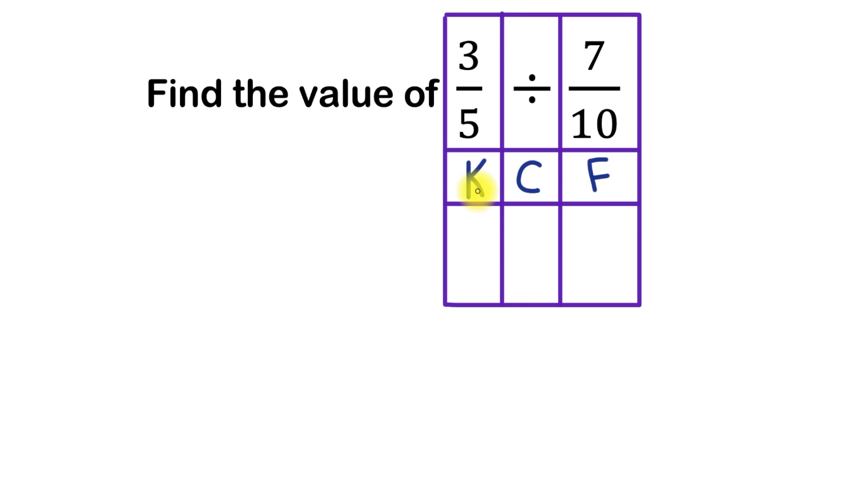When we say keep, we mean this fraction here, we're going to keep it exactly as it is. So since we have 3 over 5, we're going to keep that 3 over 5.